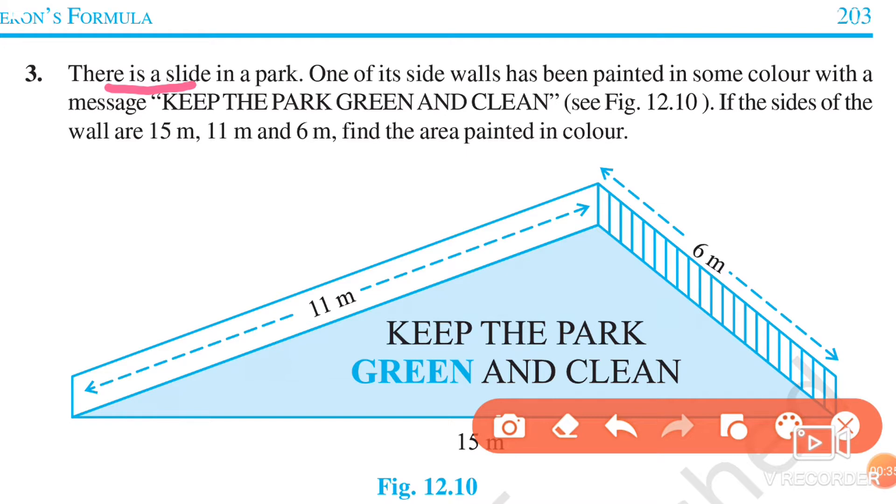Now this wall is painted and something is written: 'Keep the park green and clean.' Now we have to find the area if this wall's sides' lengths are 15, 11, and 6.